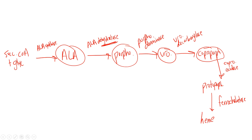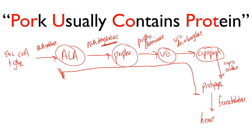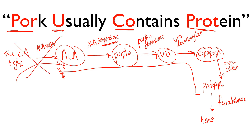Now I want to show you a cool mnemonic I developed for the porphyrias — the really confusing middle part of the pathway. It's very difficult to remember whether it goes porphobilinogen, then euro, then copro, then proto. The mnemonic is: 'Pork Usually Contains Protein.' And this isn't a one-letter mnemonic — pork gives you P-O-R, three letters, so it's much more specific.